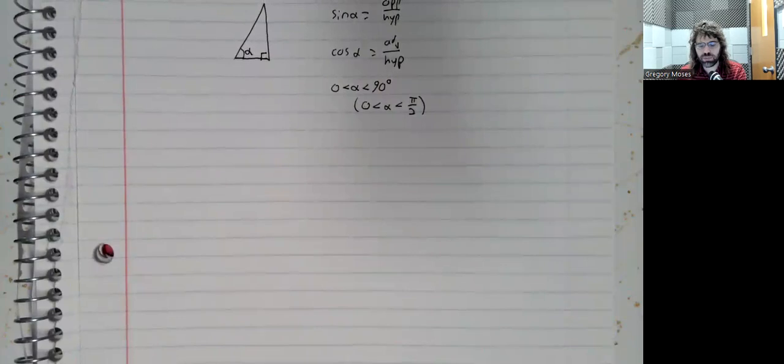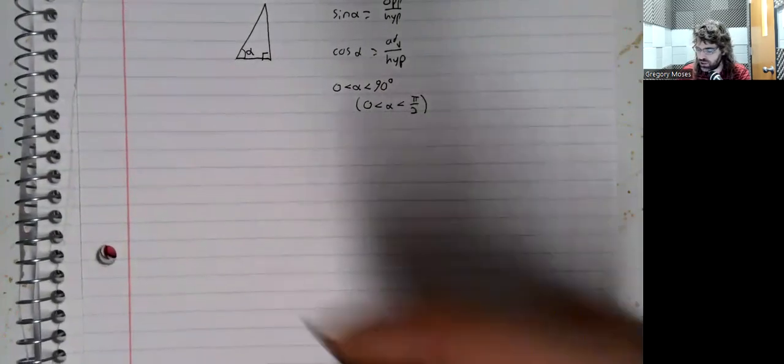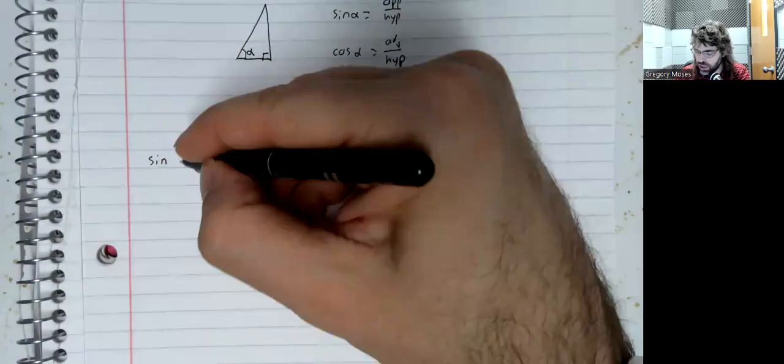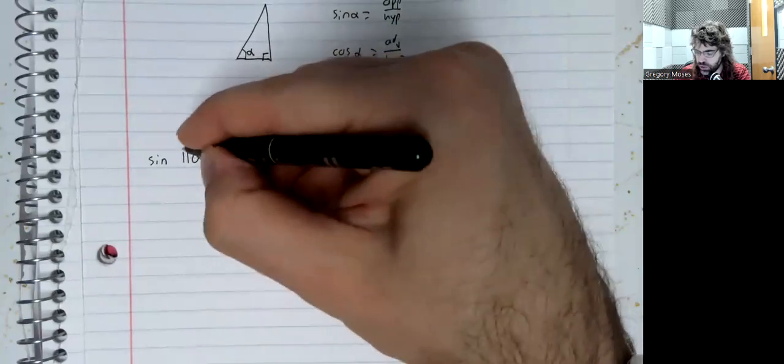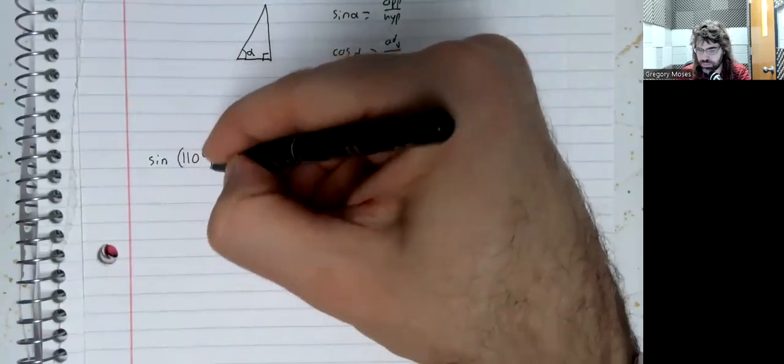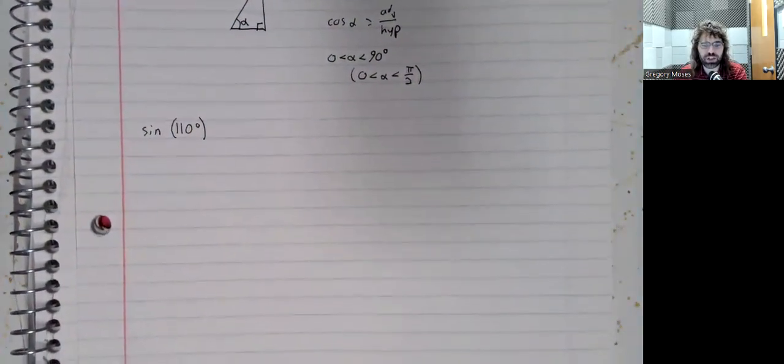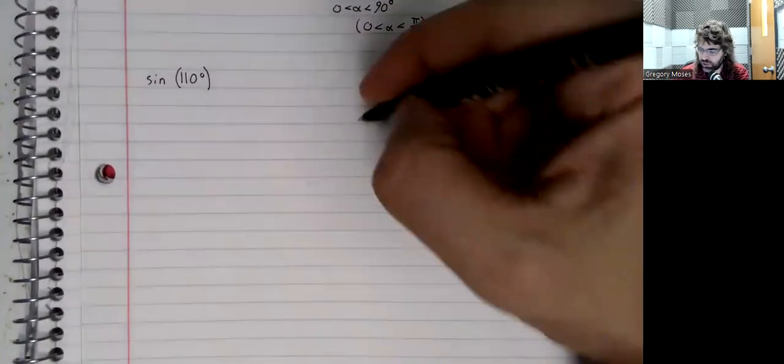What if we have something outside of this range? What if we wanted to find the sine of 110 degrees? To do that, we need an alternative definition, and that definition is as follows.